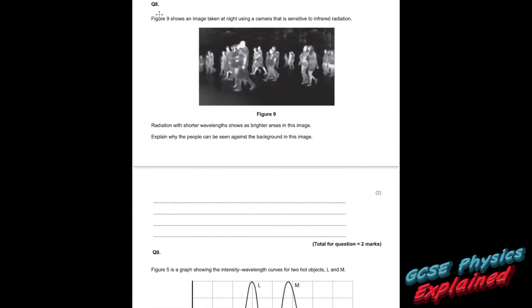Question 8. Figure 9 shows an image taken at night using a camera that is sensitive to infrared radiation. Radiation with shorter wavelengths show as brighter areas in this image. So all of these people's faces are showing up white, so they must have short wavelength. All of these parts here that's turning up black must have a long wavelength. Explain why the people can be seen against the background in this image.